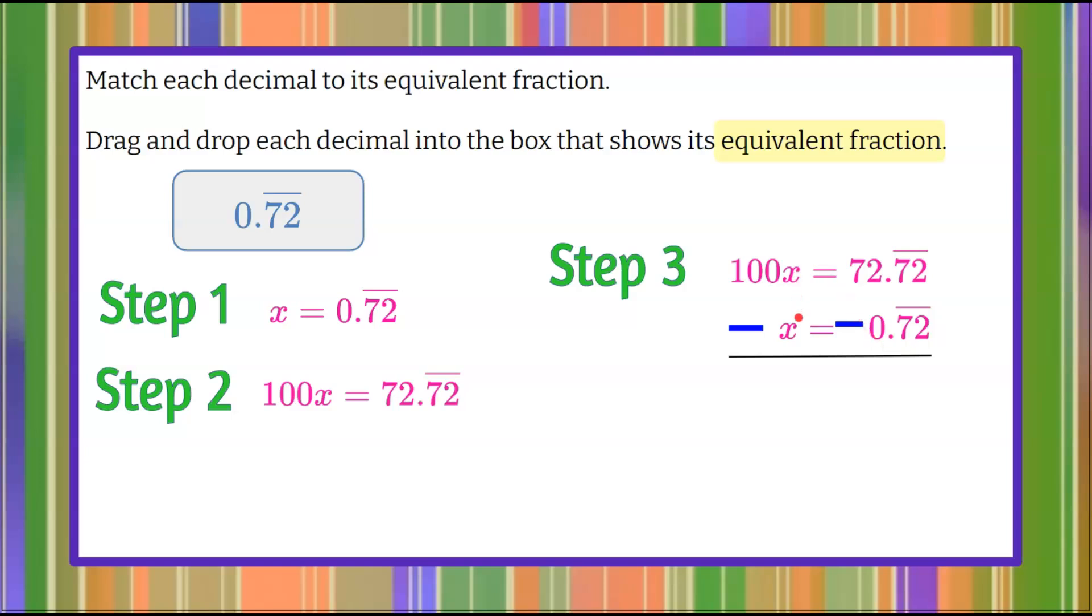100x subtract x is 99x. 72.72 repeating, the 72 repeating is eliminated. 72 subtract 0 is 72. So here's an equation that I want to solve for x, which will give me my fraction equivalent. I'm going to divide each side by 99 to solve for x. 99 divided by 99 is 1, leaving me 1x or x. And then I need to simplify my fraction.